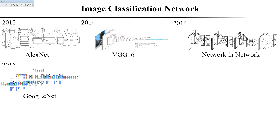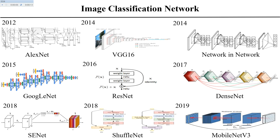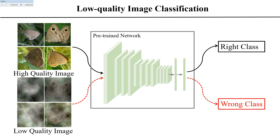Image classification is a long-standing problem in computer vision. In recent years, various types of classification networks have appeared. Benefiting from large-scale datasets like ImageNet, these networks achieve high classification accuracy. However, due to the influence of factors such as weather conditions, noise, and motion, images captured in real environments are usually low-quality.